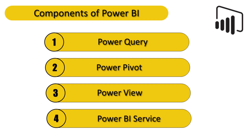If we talk about the components of Power BI, there are four basic components that help us perform the necessary actions on data. The first component is Power Query, which is used to clean the data. When we talk about raw data from a source — whether structured, semi-structured, or unstructured — it is very likely that the data contains blank records, null values, or duplicate records. Power Query helps us clean the data so that it can be analyzed effectively without affecting the results.